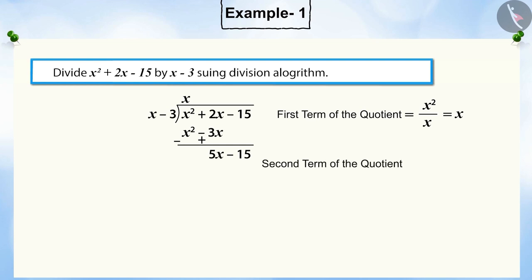To get the second term of the quotient, divide the highest power term in the new dividend, i.e., 5x, by the highest power term of the divisor, x. By doing this, we get the second term of the quotient, 5. Multiplying the divisor by this quotient and subtracting it gives the remainder 0.